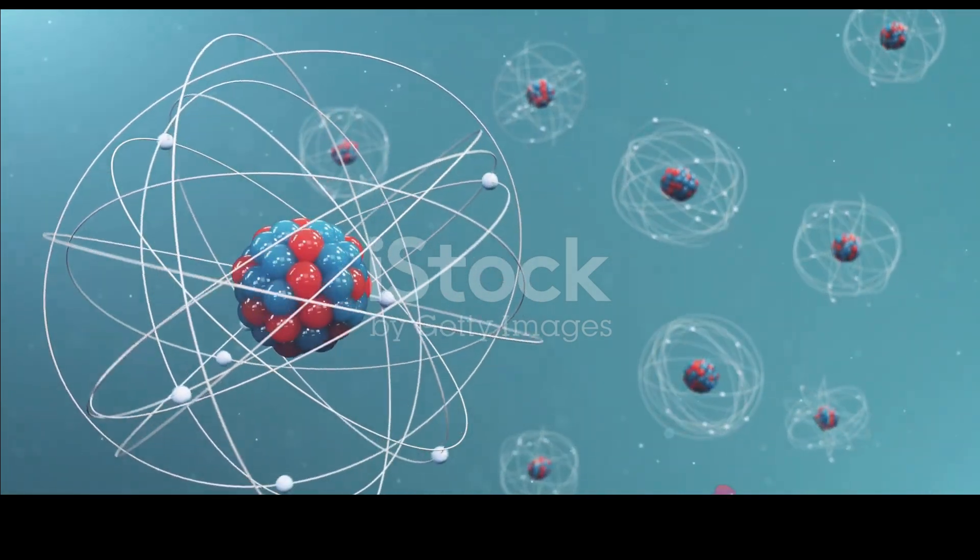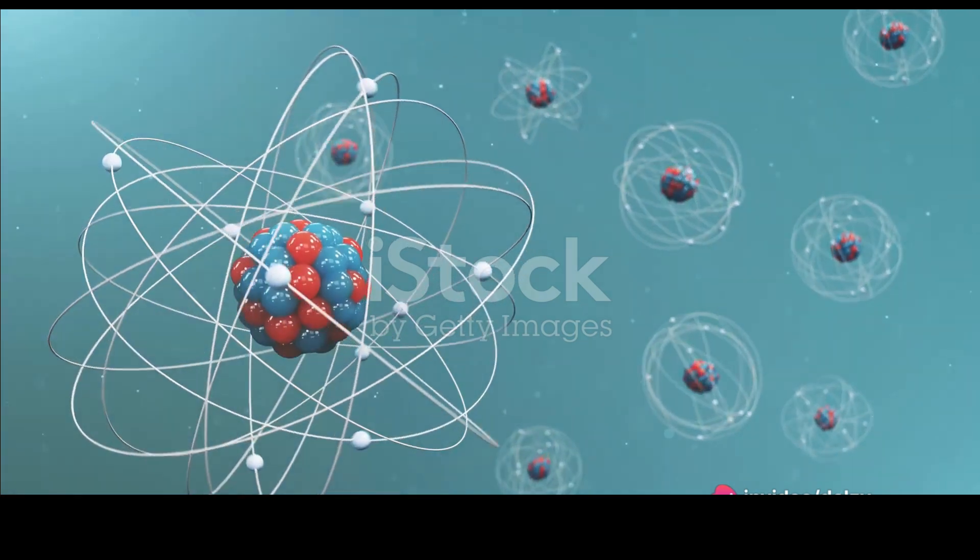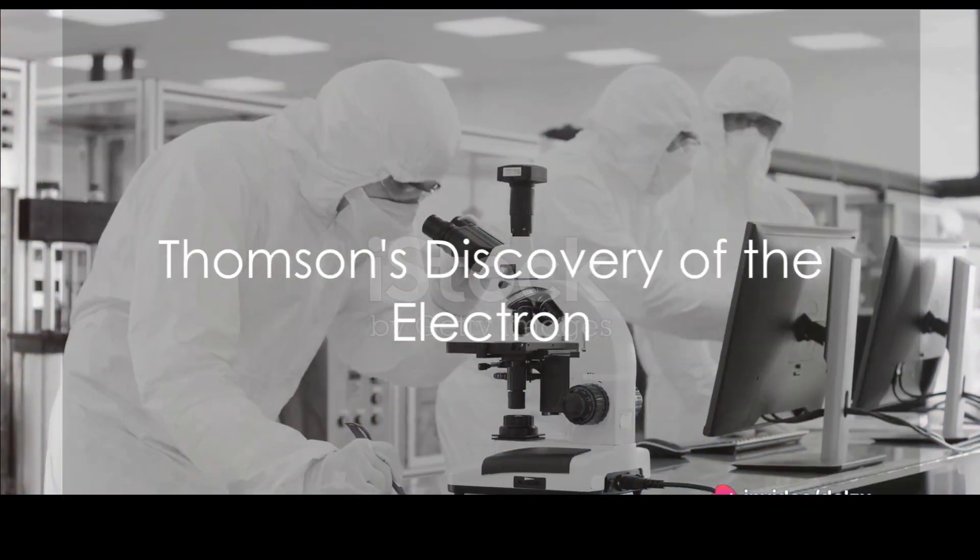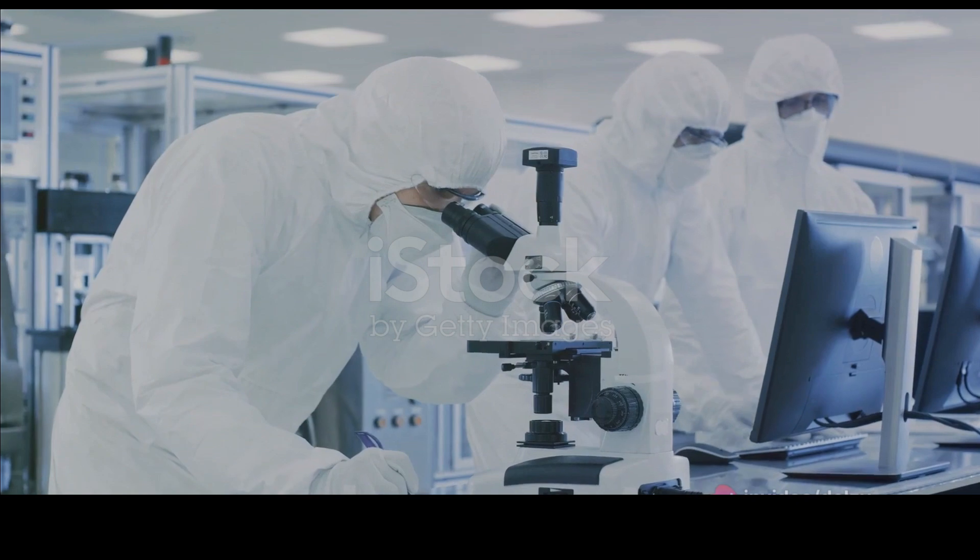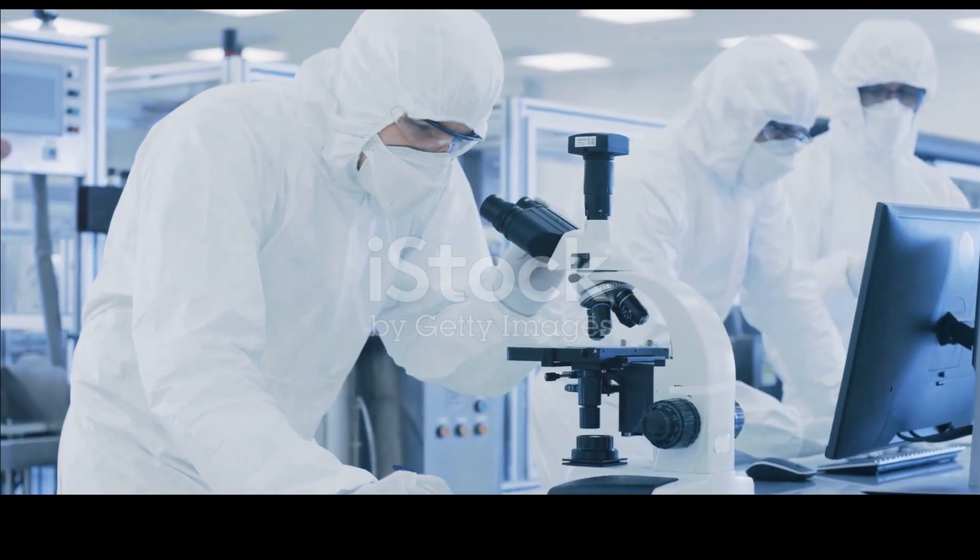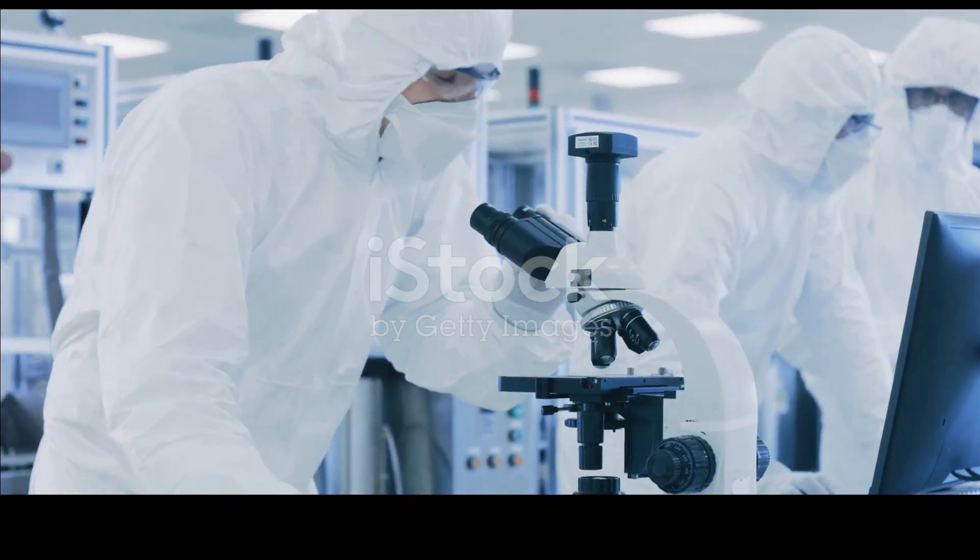After the atom was established, there was a need to understand the components of the atom. In the late 19th century, J.J. Thompson, a British physicist, discovered the electron, proving that atoms were, in fact, divisible.